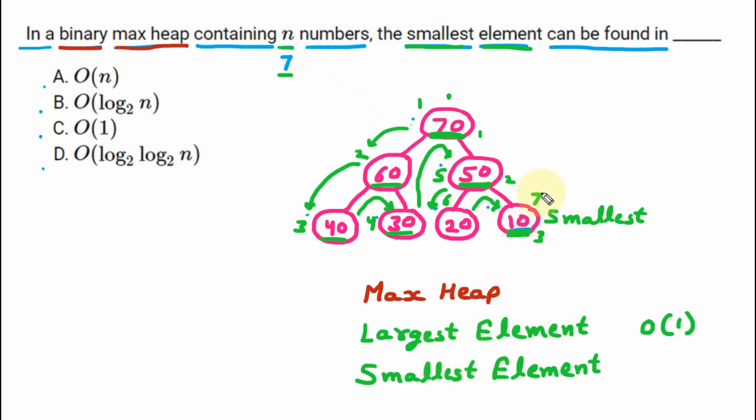So for the worst case to find the smallest element, we need big O of n comparisons. So here we only have the option number A and all other options are not matching. That means if you want to find the smallest number in a max heap, then here we have big O of n.